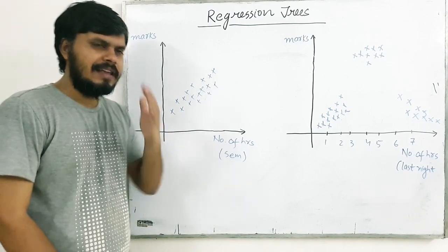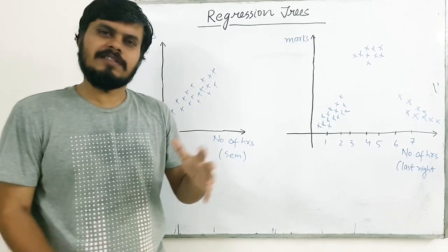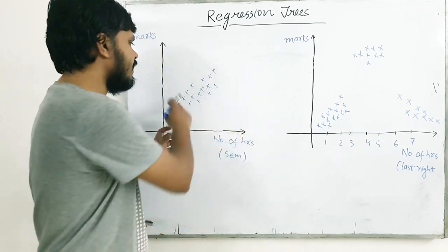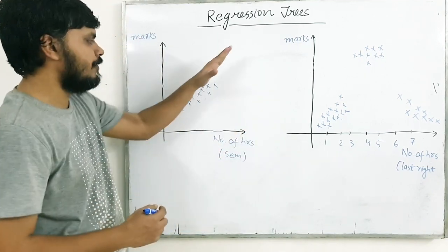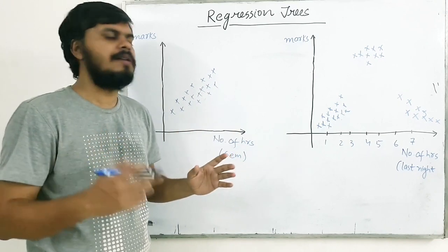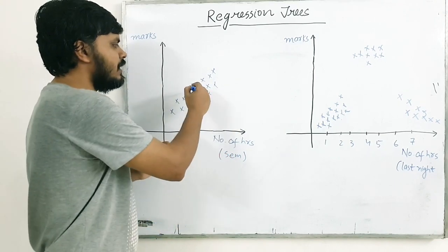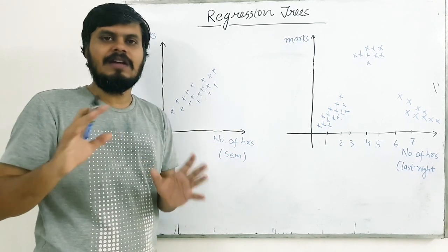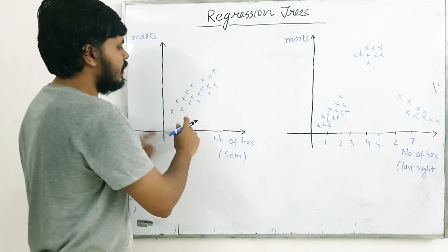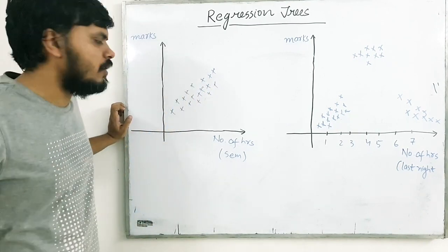So, again you can see there's a general trend ki, aap jitna zyada padhte ho, college mein marks utne zyada aate hai, roughly speaking, right? So, there is a linear sort of relationship, right? Not perfectly linear, kyunki kuch log kam padhke zyada laate hai, kuch log zyada padhke kam laate hai, so, there is a linear sort of relationship, jo is data mein capture ho raha hai, yahan pe har cross is a student, okay?